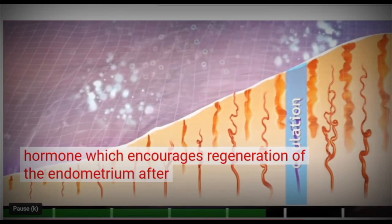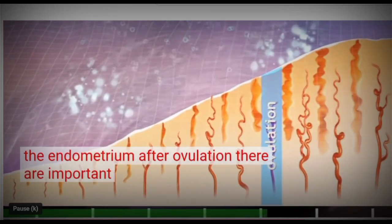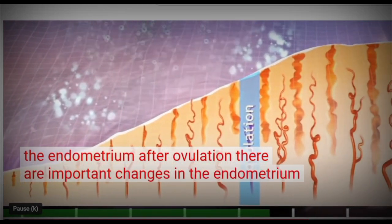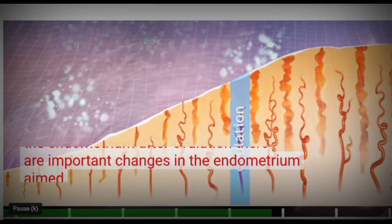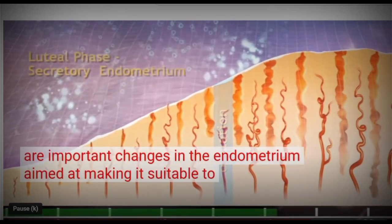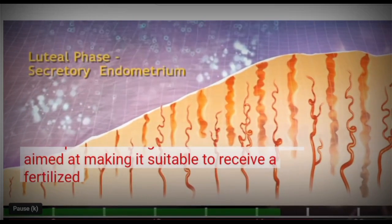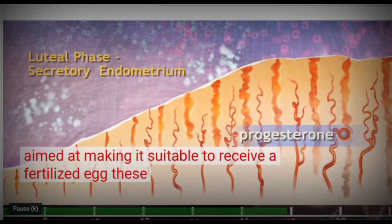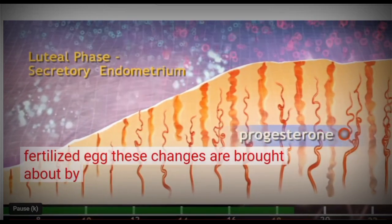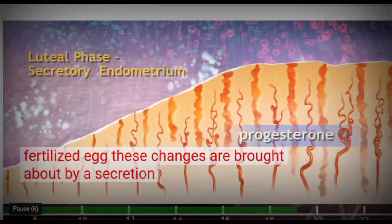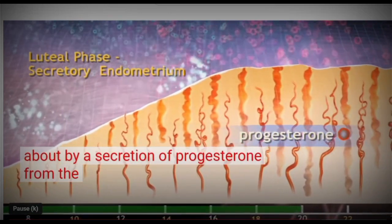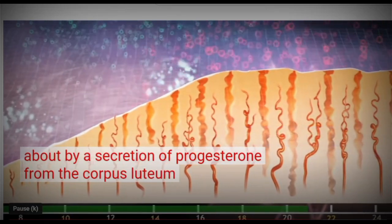After ovulation, there are important changes in the endometrium aimed at making it suitable to receive a fertilised egg. These changes are brought about by a secretion of progesterone from the corpus luteum.